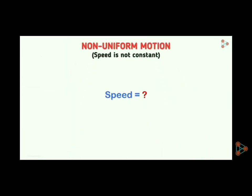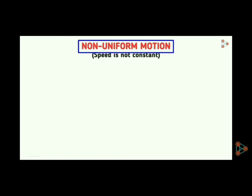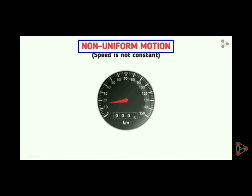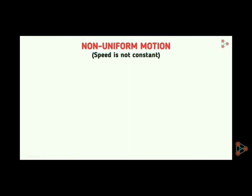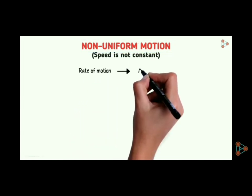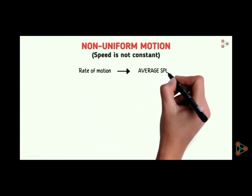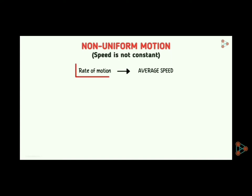So how can you find the speed in non-uniform motion? Because a constant speed is not known here — in non-uniform motion the speed is not constant, the speed is changing. So non-uniform motion will be referred to in terms of the rate of motion, which is the average speed.